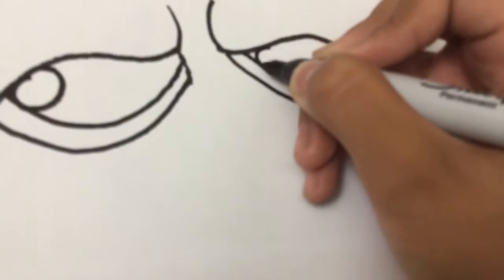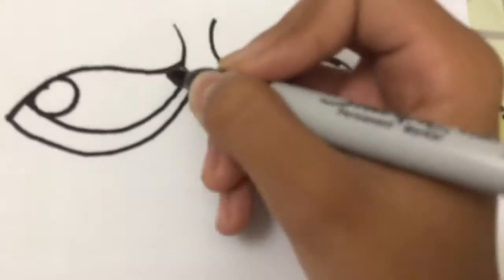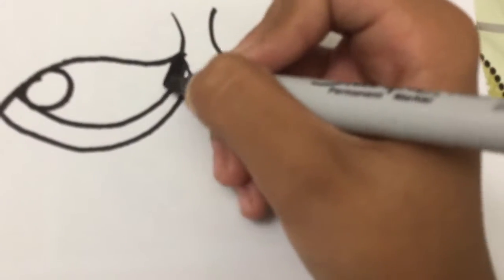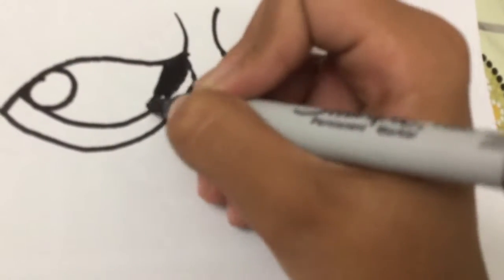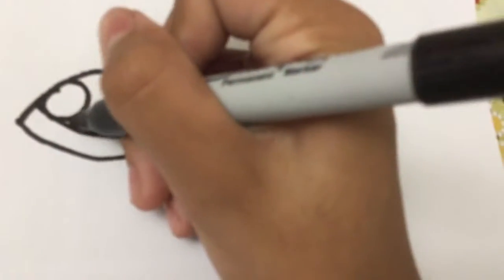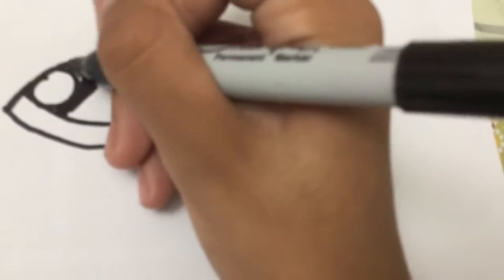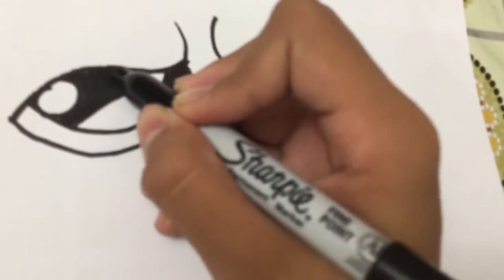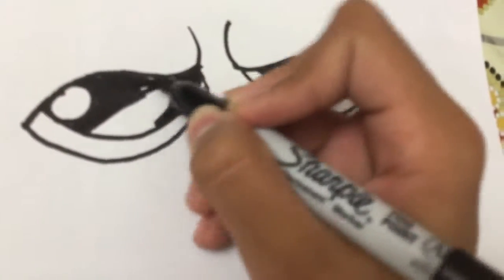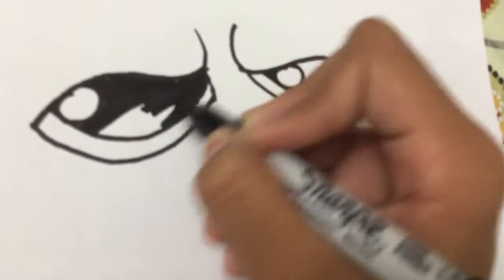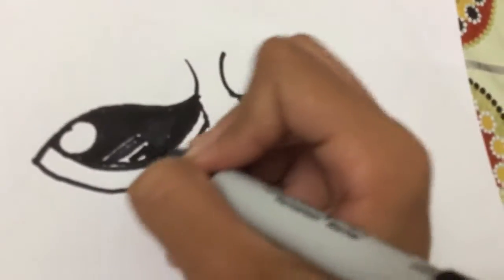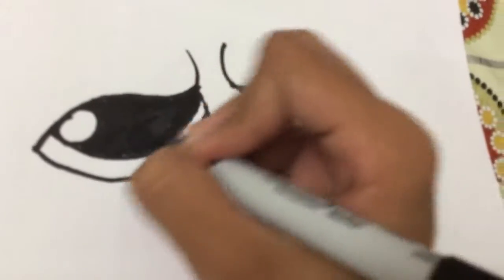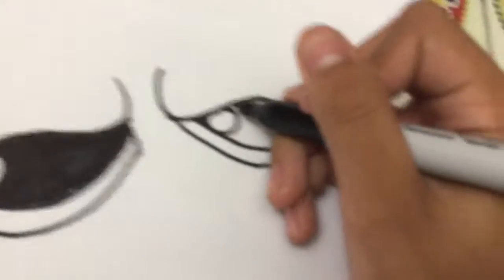And then there's a circle in there and you color that. I'm using a Sharpie so it's easier to color. Do the same on the other eye.